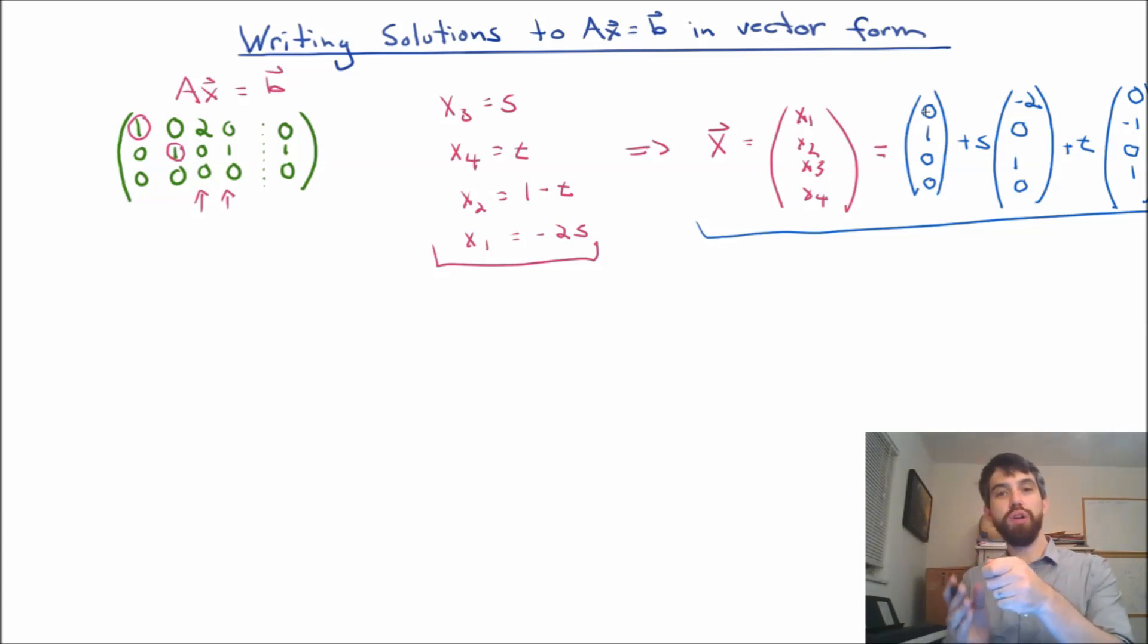The x is always equal to this constant vector that we have. But then from there, you can go some amount s in this second vector that we have, and some amount t in the third vector. So that's how I sort of think about it, is you're fixed in at that constant vector, but you can leave that constant vector some amount s in the one direction and t in the other direction.